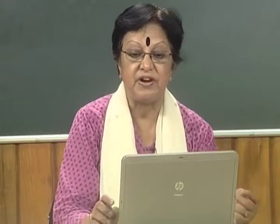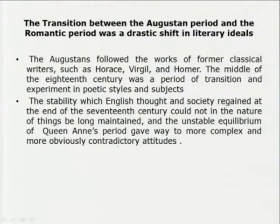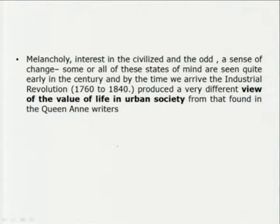The middle of the 18th century was a period of transition and experiment, not only in poetic styles and subjects. We find that transitions take place, and some main characteristics of what marked an age are carried over to the next. The stability which English thought and society regained at the end of the 17th century could not be long maintained, and gave way to more complex and contradictory attitudes, where the value of life in urban society was emphasized.